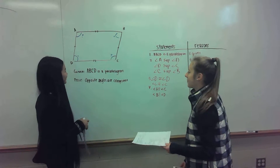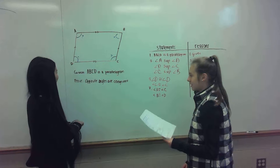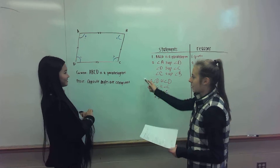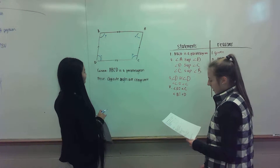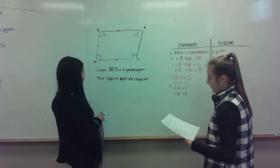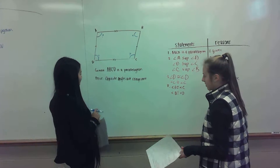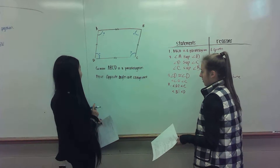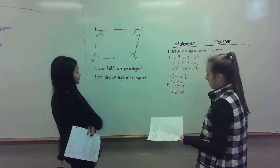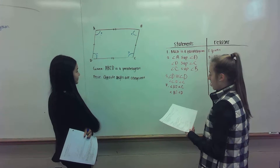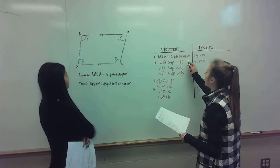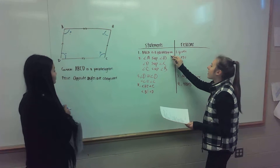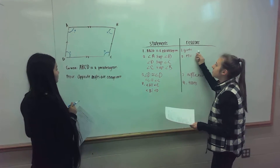Okay, so we're given that ABCD is a parallelogram, and we're trying to prove that the opposite angles — I can do it. So angle C, I can do it, and angle B, I can do it. ABCD is a parallelogram.